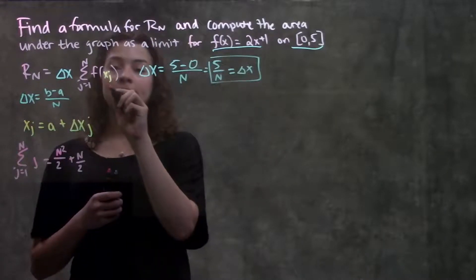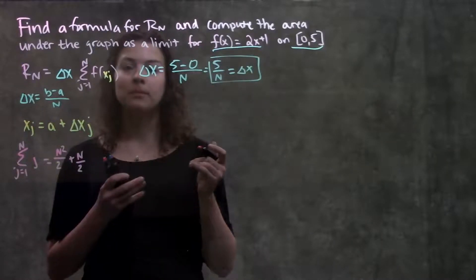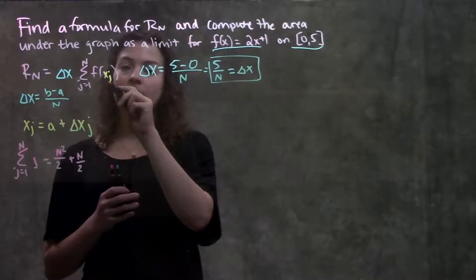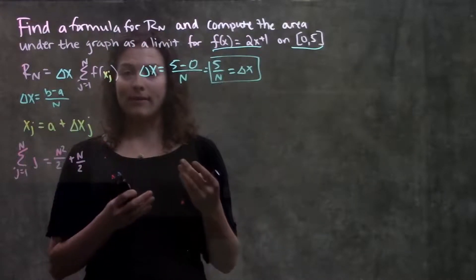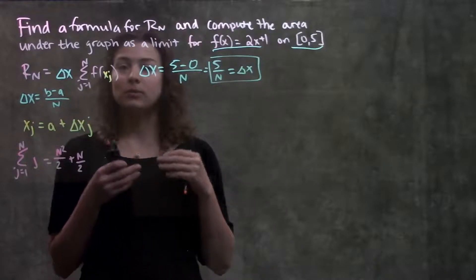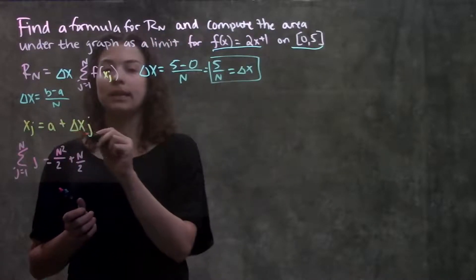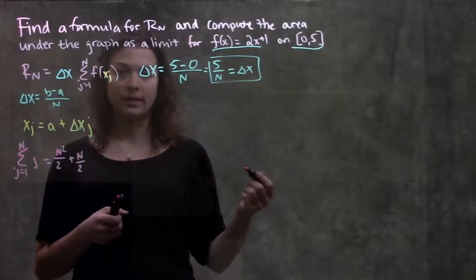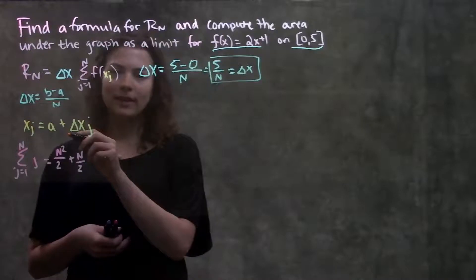And for our f of x_j, what we've done in previous problems is we've just plugged in our delta x, our x value, into our function to find our y value. In this case, though, since we're looking for a general formula, we're going to use this formula here to calculate our x_j, or our x value for each rectangle. And when you first look at this, it looks super confusing, but it actually makes a lot of sense.